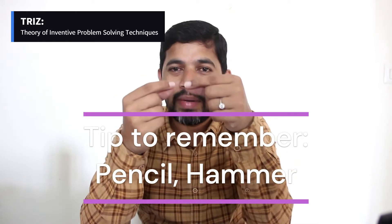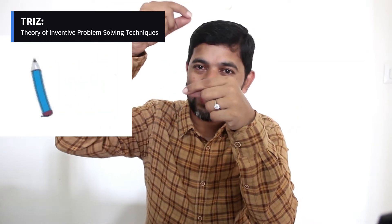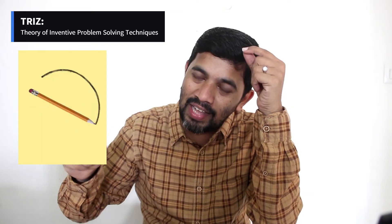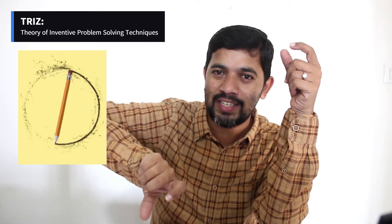To remember the TRIZ model: think of a pencil — you can write with it and also erase with it, two opposite functions. Similarly, a hammer lets you drive a nail in and also pull it out. These contradiction functions are foundational examples of TRIZ thinking, and there are many more such examples.